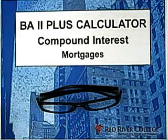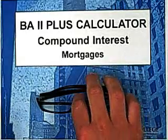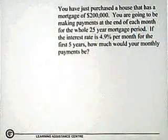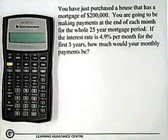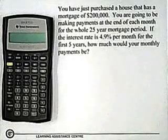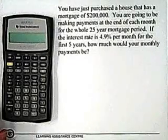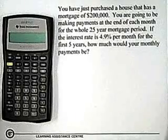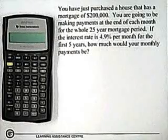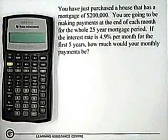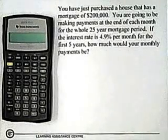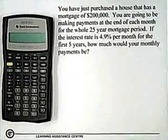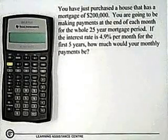Welcome to another in the BA2 Plus calculator series for compound interest. In this one, we're going to take a look at mortgages. A mortgage is when we're buying a house and we have to pay off the loan. With mortgages, we can either compute N for the number of payments, or PMT for payment size itself, depending on what the question is asking. We might also have to do a second calculation to figure out payments for the next term, using the amortization function to figure out how much is still left owing after the first term is done.